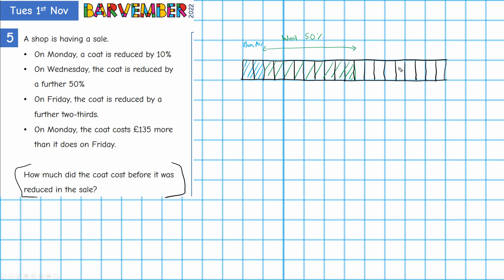...seven, eight, nine parts left and nine divided by three is three. So every three of these is one third. So that's, there we go, one third, two thirds. Okay so that takes us to here. So this is Friday and that's the two-thirds.